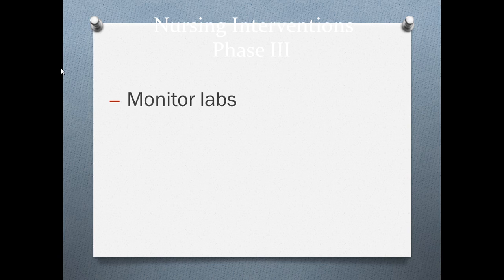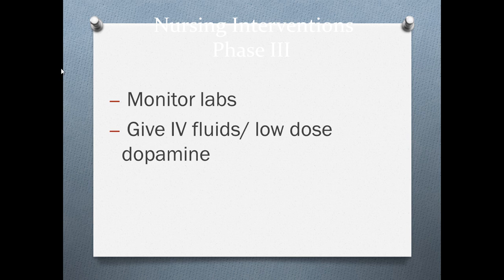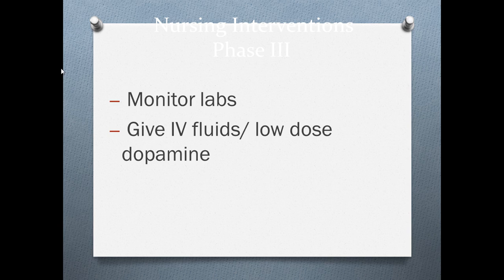Interventions for phase three: monitor labs, especially fluid and electrolyte balance — sodium and potassium may change daily. We may give IV fluids if the patient is dehydrated. We don't want to cause hypotension and push them back to phase two, since hypovolemia is a cause for pre-renal failure. We may also give low-dose dopamine — this is also the dosage problem for this content, so check Blackboard for the five examples. Low-dose dopamine increases blood pressure by constricting peripheral vessels while dilating renal arteries, allowing more blood flow to the kidneys.